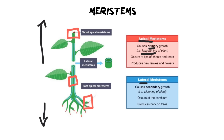The lateral meristems on the other hand are there for secondary growth and they occur in something called the cambium. When we move on to plant organs I'll explain what plant cambium is, but essentially when you want to make a plant like a tree or even just a shrub or a bush, you want its stems to become thicker. The cambium is a ring of tissue that allows you to grow in width.